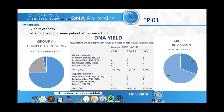In conclusion for Group A, it is simple to perform and can be done on all types of teeth, but the main disadvantage is that it completely destroys the tooth, preventing further radiographic, anatomic, or biochemical examinations. Moreover, it does not account for the exact location of DNA within the tooth, adding a dilution factor to the material with poor DNA.